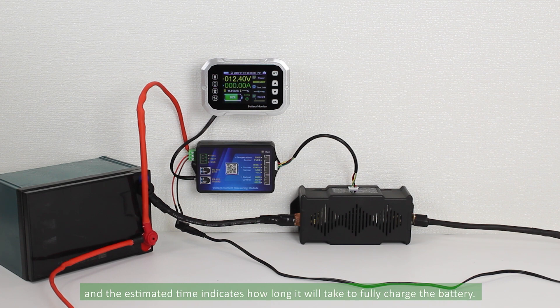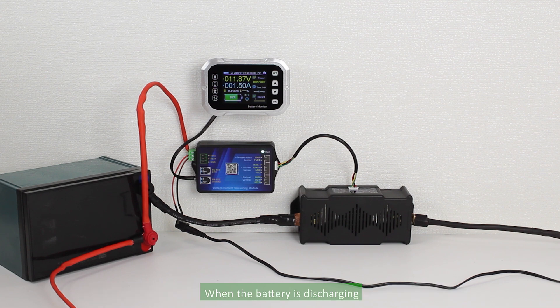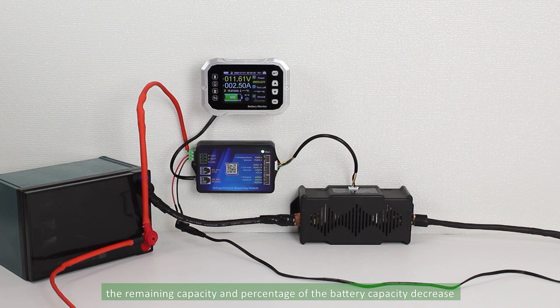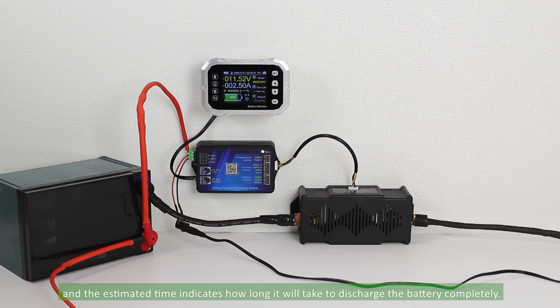When the battery is discharging, the color of the current is blue, the remaining capacity and percentage of the battery capacity decrease, and the estimated time indicates how long it will take to discharge the battery completely.